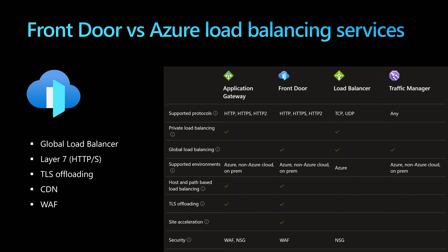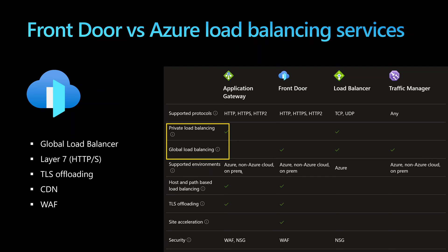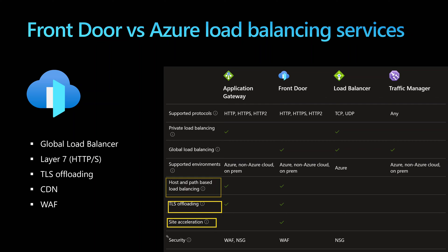In Azure we have four load balancing solutions: the Application Gateway, the Load Balancer, and the Traffic Manager. Each service has its own set of properties. They differ on whether they support layer 4 or layer 7, private or global load balancing, on-premise and other cloud providers, host and path-based routing, TLS offloading, site acceleration via CDN, and security features like the WAF.